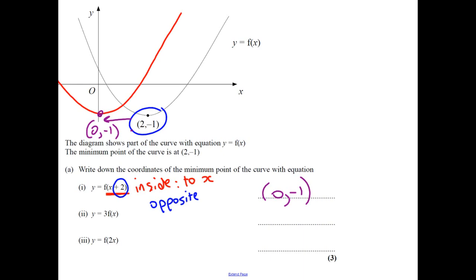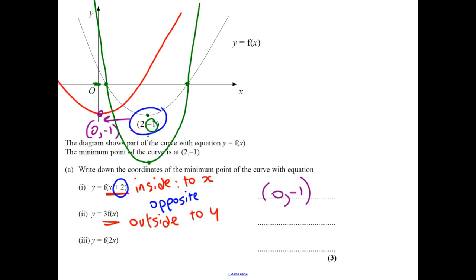Right, 3f(x). This is outside, so it's to y. You just do what it says on the tin — you multiply by 3. Now at A-level they have to sketch these. The points where y is 0 you're going to still get 0, because 3 times your answer of 0 still gives you 0. Everything else is going to get multiplied by 3. So your y-value is going to go to −3, and it has the impact of being stretched. This coordinate is just (2, −3) — 3 times your answer of −1.